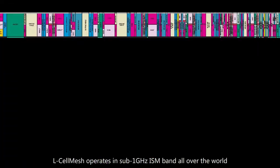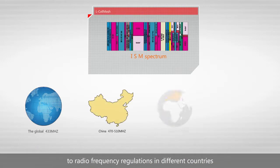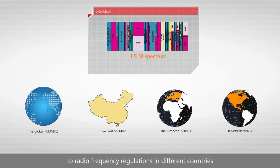L-Cell Mesh operates in sub 1 GHz ISM band all over the world. The frequency band can also be customized according to radio frequency regulations in different countries.